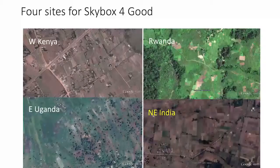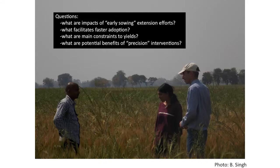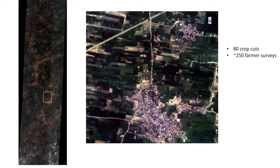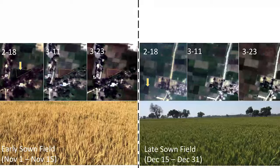For India, another site we're working, this is a picture where we were in the field talking with wheat farmers. There are lots of questions about interventions around the timing of the wheat season and different technologies to bring it more in line with the optimum. The Skybox data on the left is allowing us to do things we couldn't do with Landsat data on the right. We're doing crop cuts in about 80 fields and about 250 farmer surveys. We've already looked at comparisons of known sowing dates and the Skybox data — an early sowing field is very clear in Skybox data that it has an early phenology. The ability to actually detect these things will allow us to track adoption of different practices and impacts on productivity.